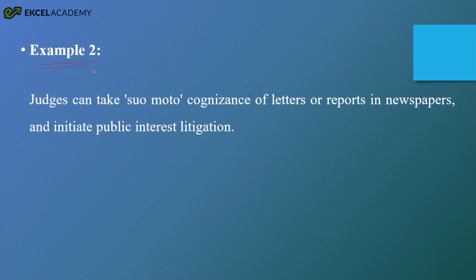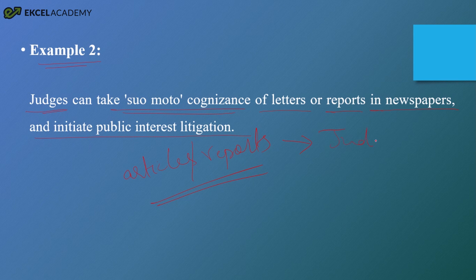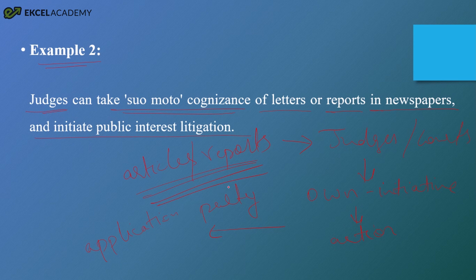Example two: the judges can take Suomoto cognizance of letters or reports in the newspapers and initiate public interest litigations. If there are any articles or reports published in the newspaper, based on such reports the judges and courts can take Suomoto action on their own initiative — they can take action without any application by any party. Based on newspaper articles and publications, the judges can take Suomoto cognizance on their own initiative and take up a case in the interest of the general public.